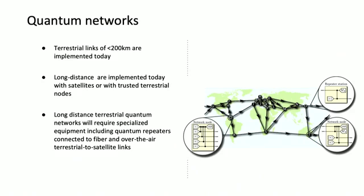A quantum internet is able to transmit not just classical signals but quantum signals. We talked about entanglement earlier — how two particles, even far apart, can be entangled such that when I measure one, the other automatically goes into a certain state. A quantum internet is a network that can maintain and transmit those quantum kinds of signals. There are fundamentally two ways of building this network: terrestrially with fiber and also with satellites.